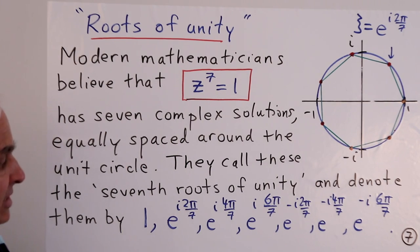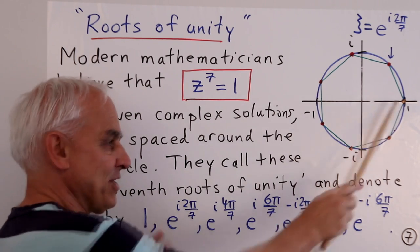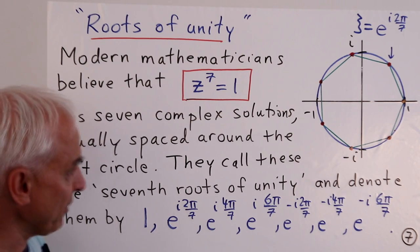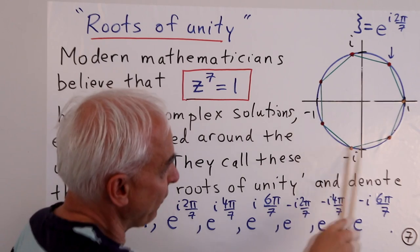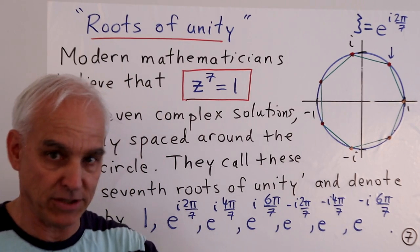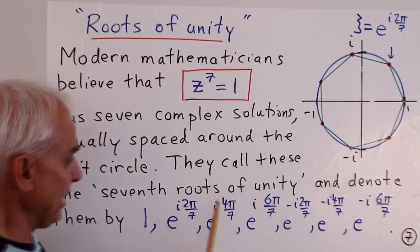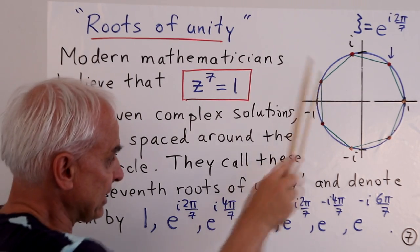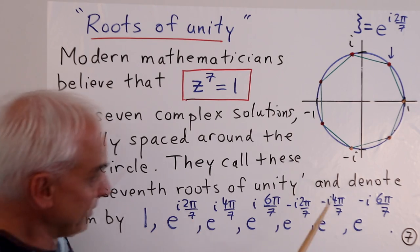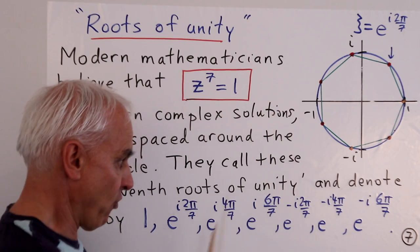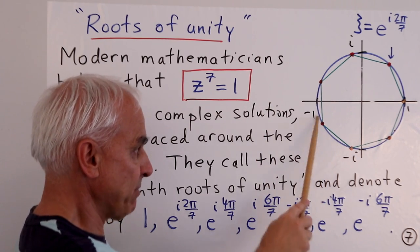The usual names or symbols for these so-called roots of unity are the following. There's 1, which is the obvious solution, and then there's e^(i·2π/7). The 2π/7 referring to the fact that we're taking the full turn all the way around, which is an angle of 2π, and dividing by 7. And then e^(i·4π/7), e^(i·6π/7), and then these other ones here are the negatives of these, e^(-i·2π/7), e^(-i·4π/7), e^(-i·6π/7).